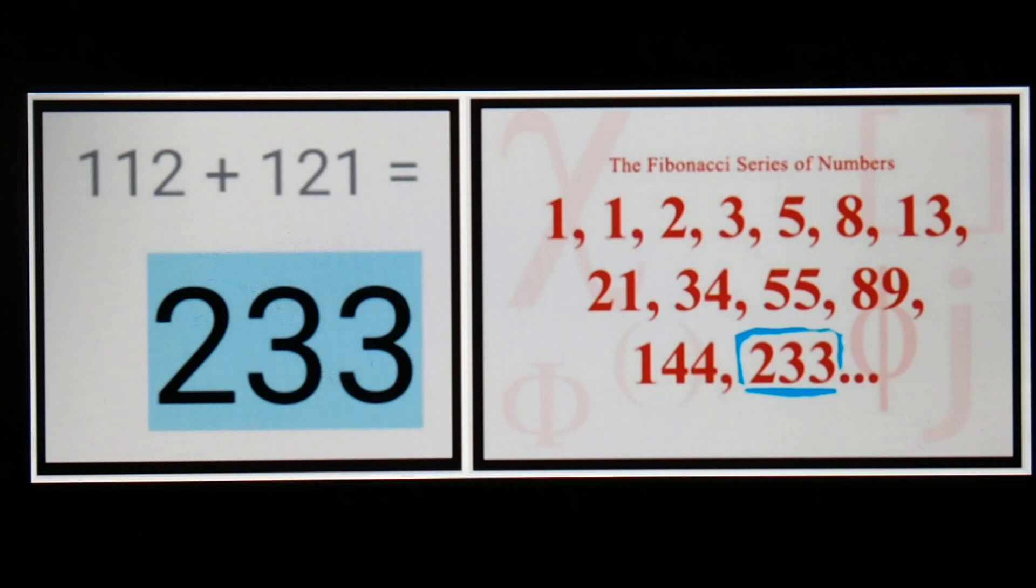So we got 112 plus 121 equals 233, which is the 13th Fibonacci number. Now of course zero is a Fibonacci number, so some people would argue that 233 might not be quite what I said there.